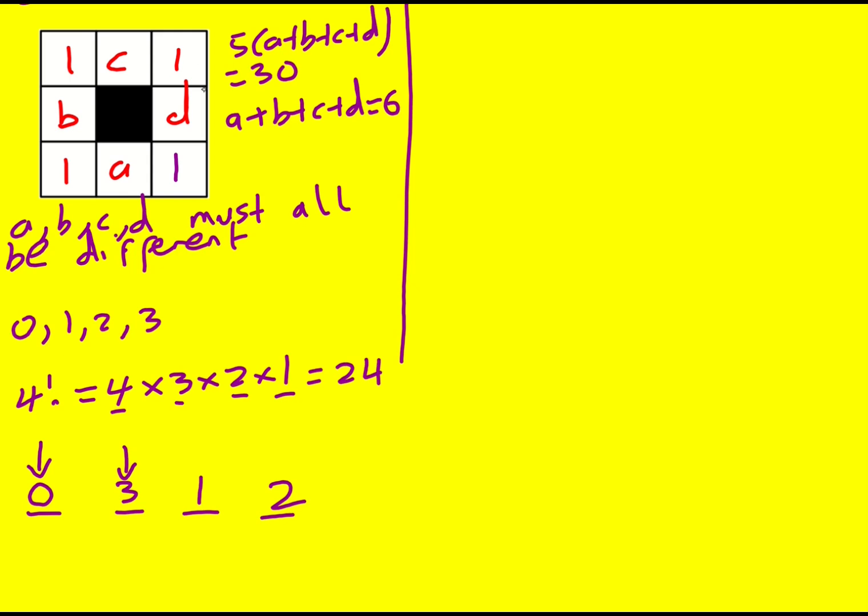Remember, these are the middle digits of the whole numbers. So I'm going to get 101, 112, 122, and 132 in some order. But the key thing is there's going to be 24 ways.